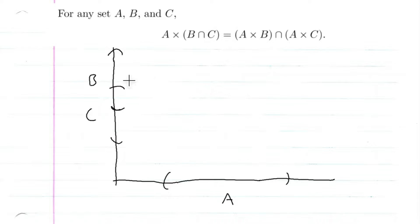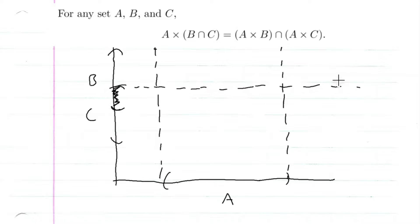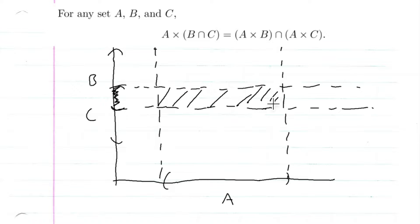So B intersection C is this piece here. And let's look at A cross that little section — so this is A right here, and this is B intersection C. So A cross (B intersection C) is this area here.